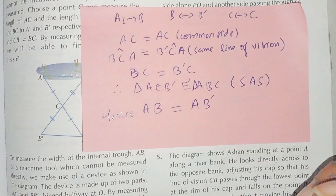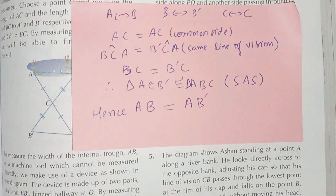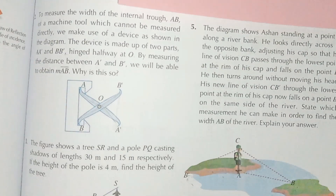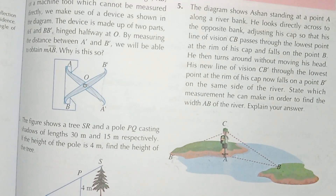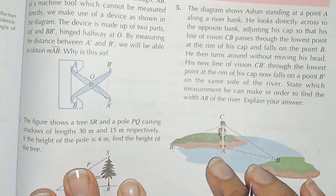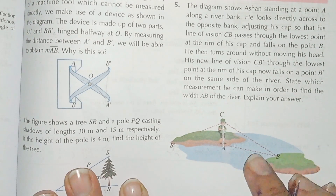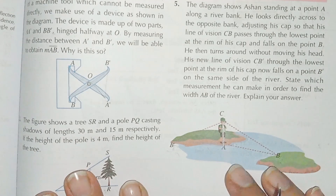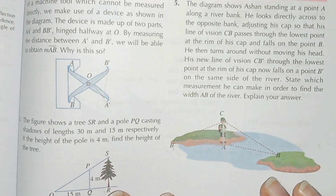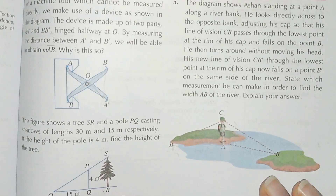We have to explain that when we find this length, we can find it by measuring AB', because both sides are equal. Question number five is solved.